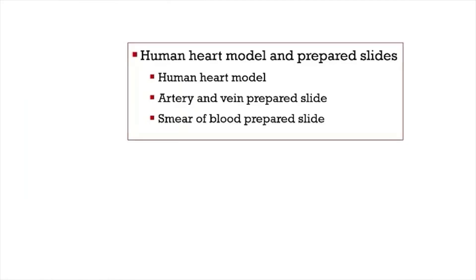Experiment 4 has two parts. The first part is the human heart model and prepared slides. Students must observe, draw, and label the structures of the human heart model. There are two prepared slides: the first is artery and vein, observed at 40x and 100x magnification, and the second is a blood smear, observed at 100x and 400x magnification. Students must draw and label the structures of artery and vein as well as different types of blood cells.